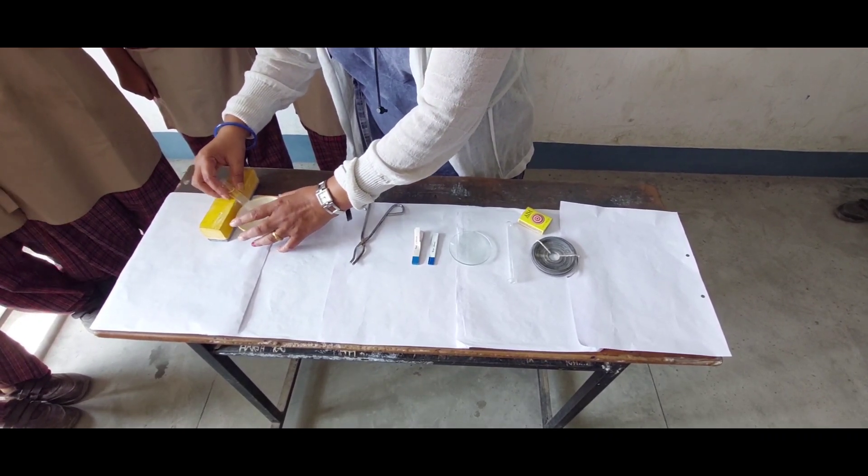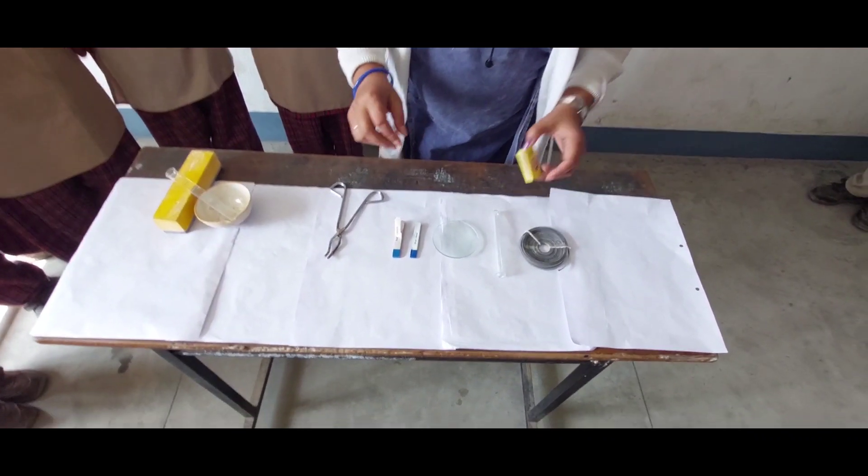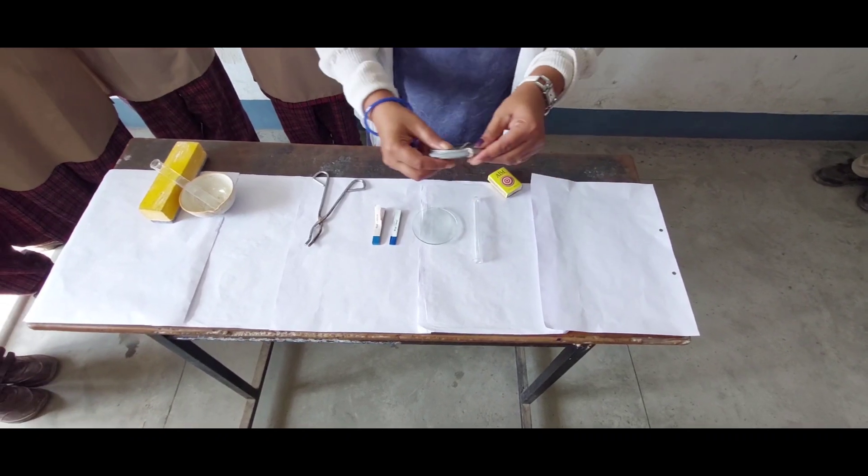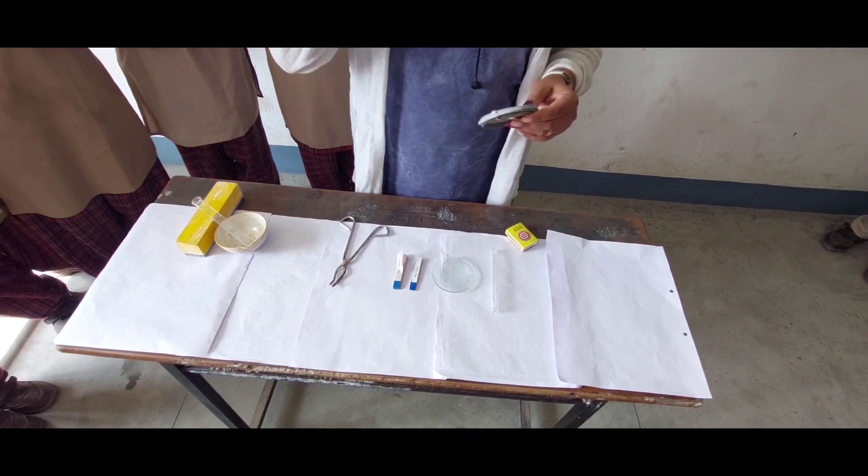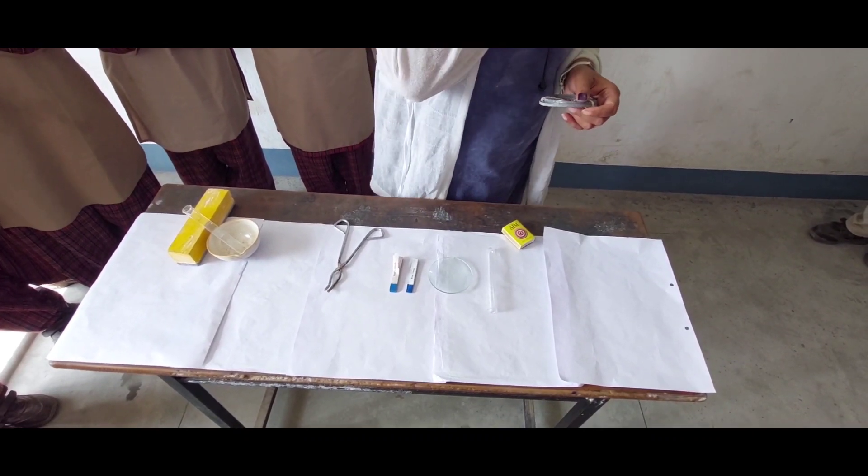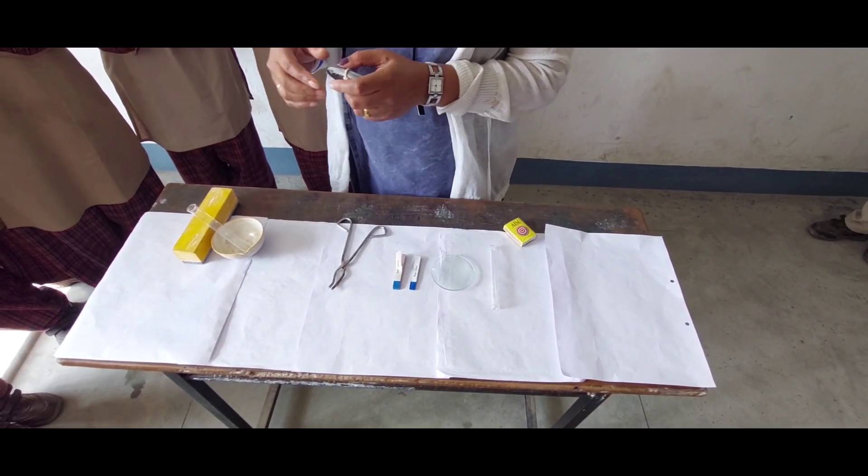What we have to do is burn this magnesium ribbon. Remember that when it burns there will be a bright dazzling light, so the light intensity will be very high.